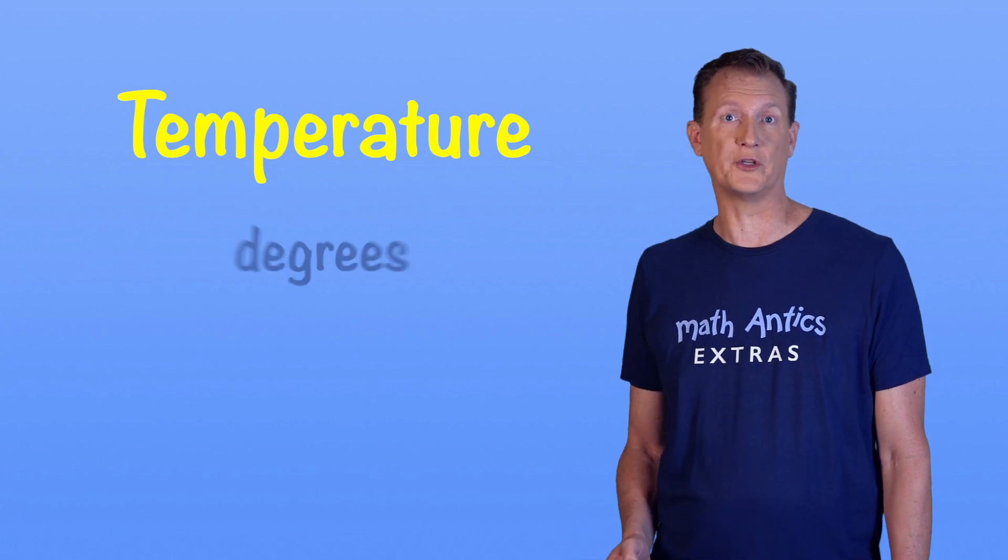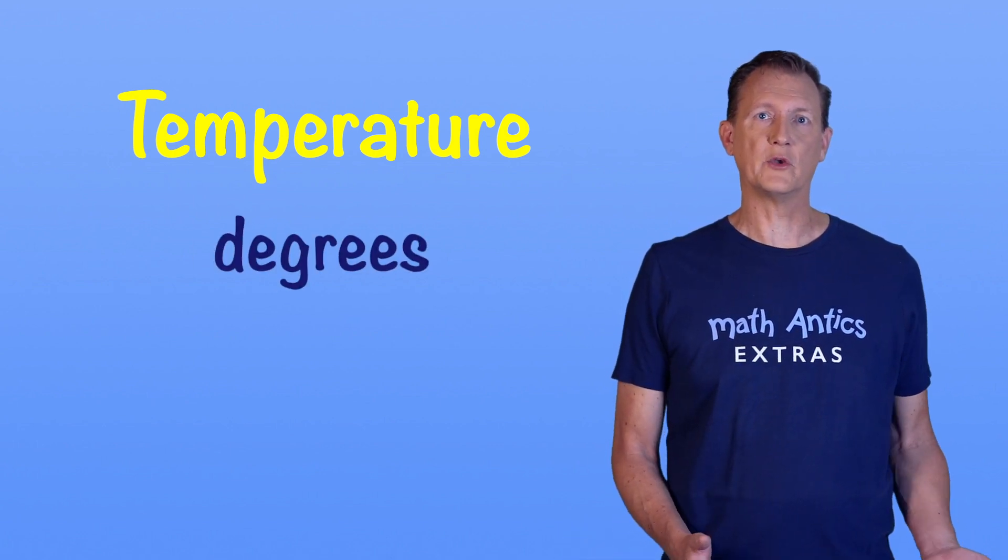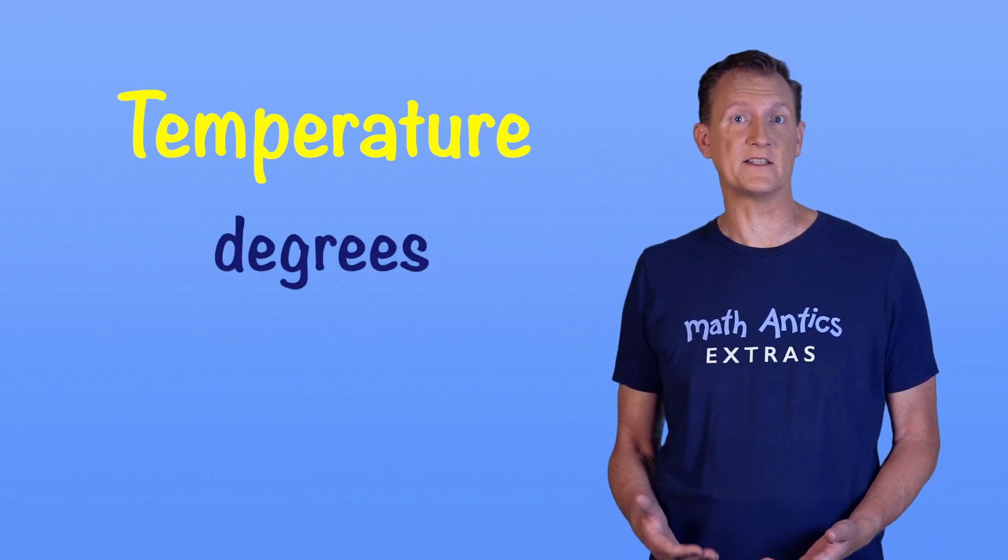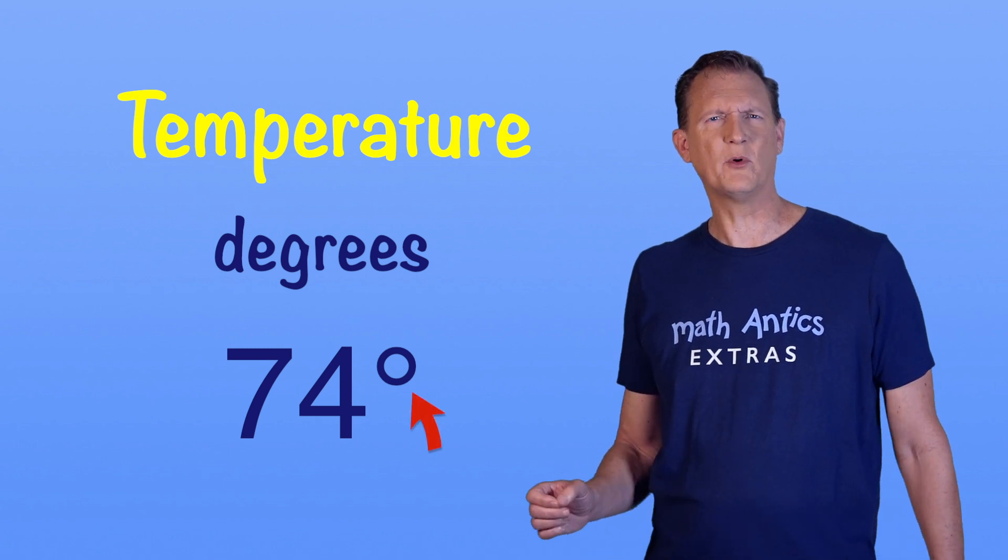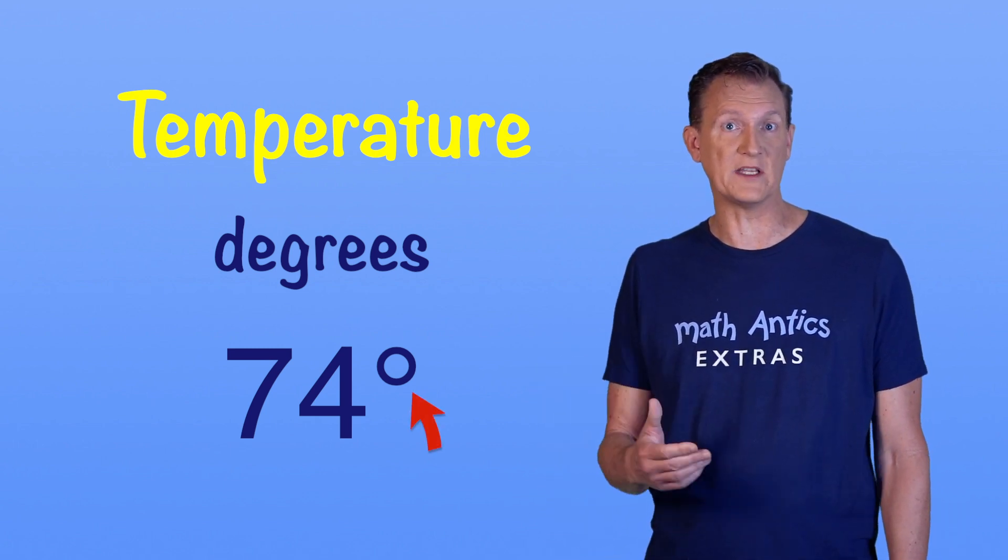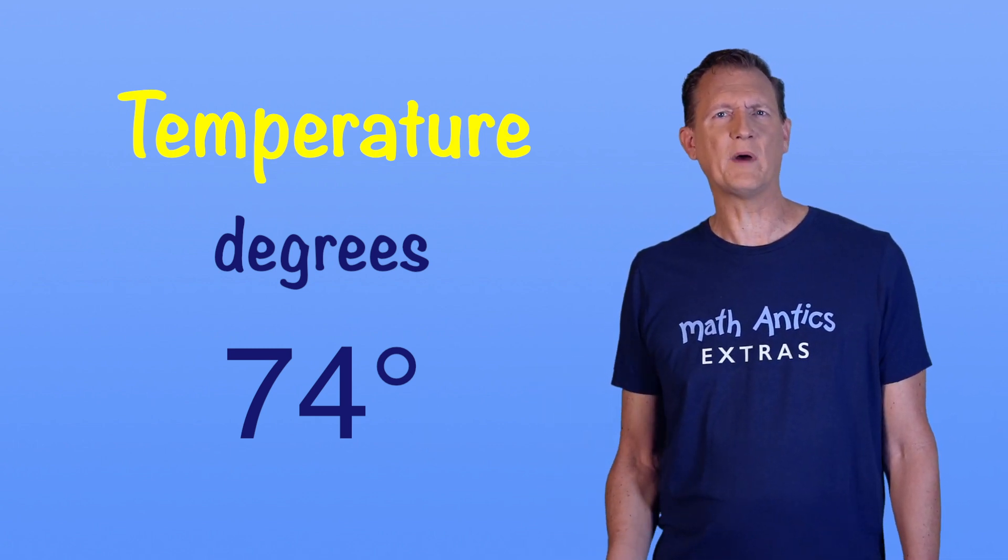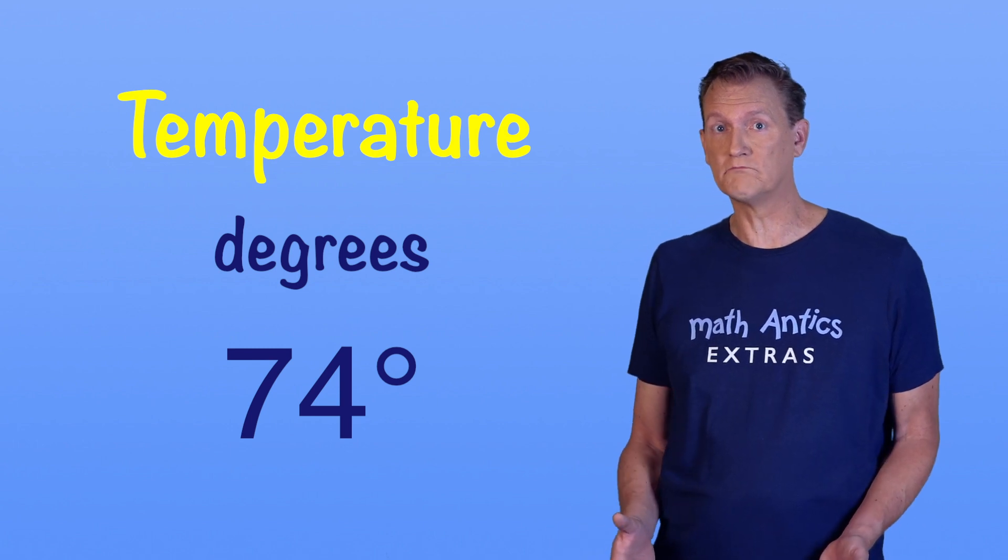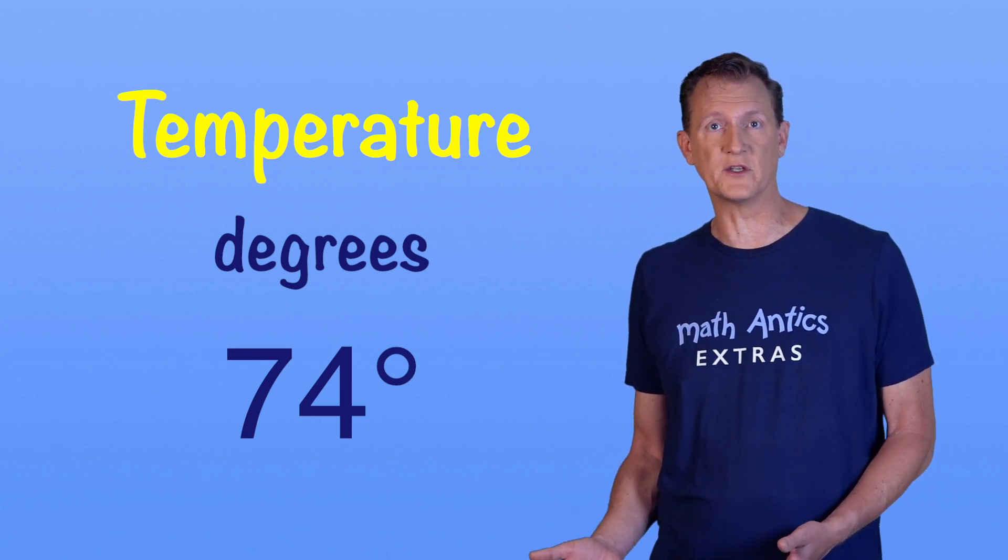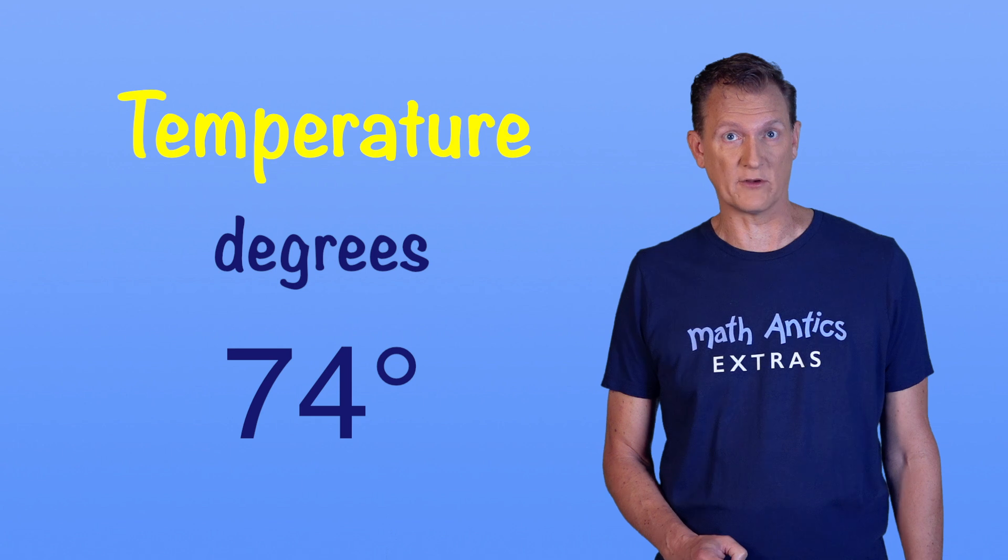Temperature is measured in units called degrees. For example, you can measure the temperature outside and find that it's 74 degrees. This symbol that looks like a little circle raised up means degrees. Some people might think that 74 degrees is cool, and some people might think that 74 degrees is warm. But they can agree that it is 74 degrees out.